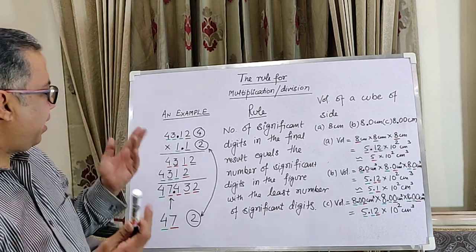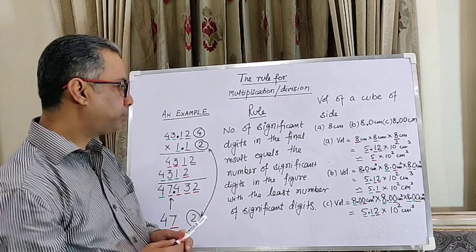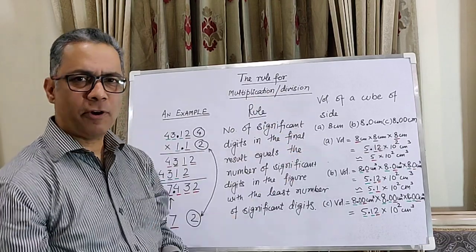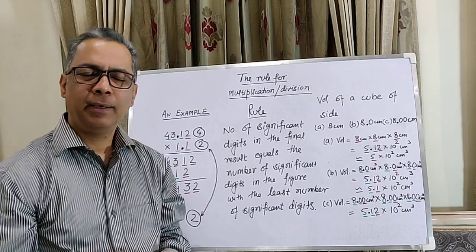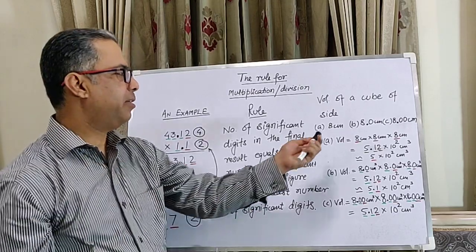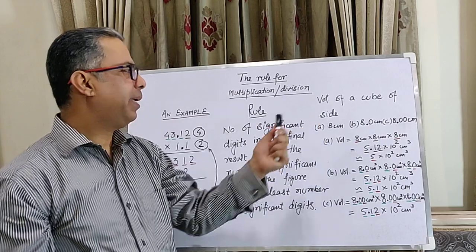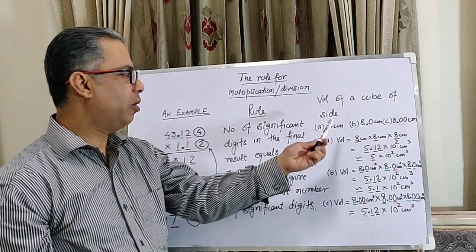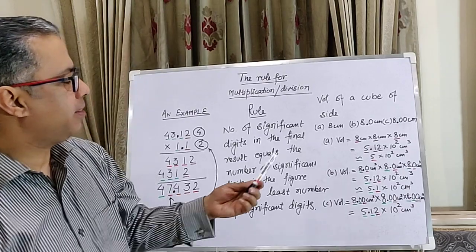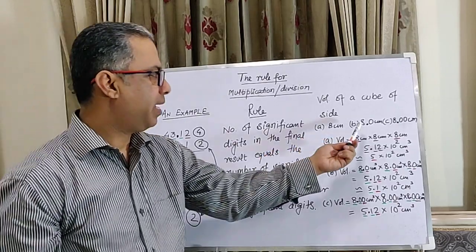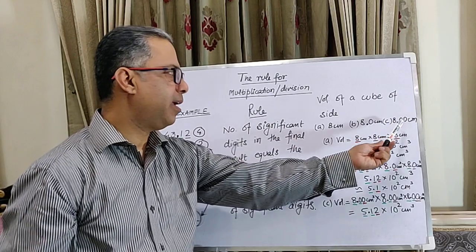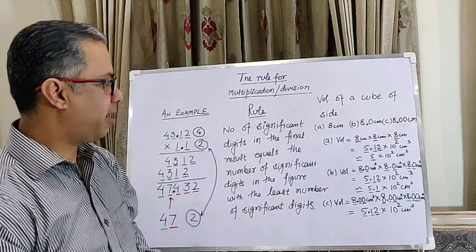We can highlight this with a simple example where we will be calculating the volume of a cube. We will be calculating the volume of a cube of 8 cm edge length, then 8.0 cm side length, and then 8.00 cm side length.